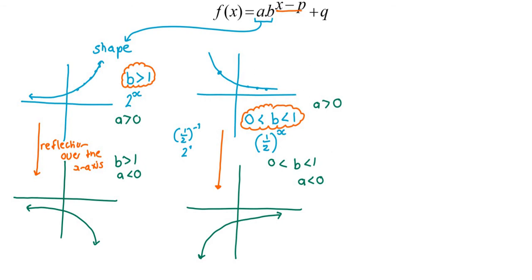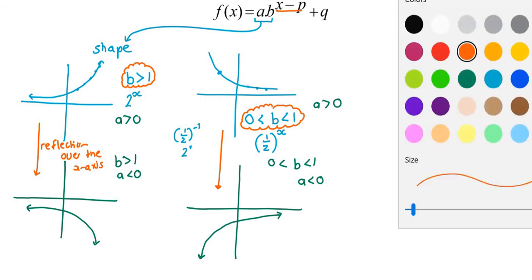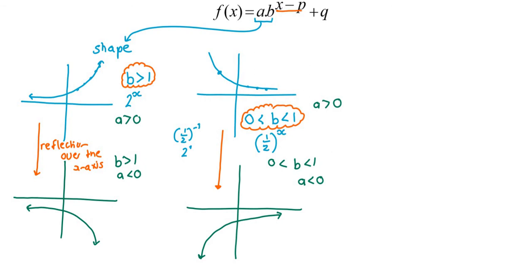So I don't think of four different shapes. I think of shape number 1 if the base is greater than 1, or shape number 2 if the base is less than 1 but bigger than 0 — and then I ask myself: did 'a' reflect it over the x-axis?